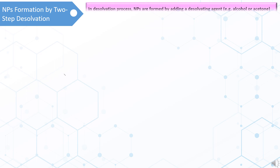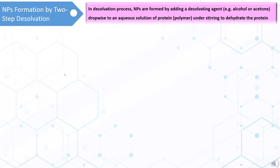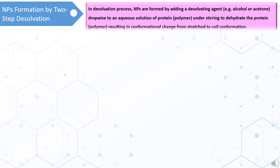In the desolvation process, nanoparticles are formed by adding a desolvating agent — for example, alcohol or acetone — dropwise to an aqueous solution of protein or polymer under stirring, to dehydrate the protein or polymer, leading to a conformational change from stretched to coil conformation.